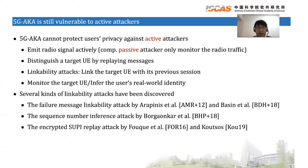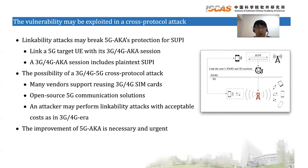Several kinds of linkability attacks have been discovered: the failure message linkability attack, the sequence number inference attack, and the encrypted SUPI replay attack. Moreover, linkability-based attacks may break 5G-AKA's protection for SUPI, as an attacker can link a target UE with its 3G or 4G AKA session, which includes plaintext SUPI. Such cross-protocol attacks are possible in practice, as many vendors support roaming with 3G or 4G SIM cards and many open-source 5G communication solutions are available. An attacker may perform linkability attacks with acceptable cost, as in 3G or 4G era. Thus, the improvement of 5G-AKA is necessary and urgent.